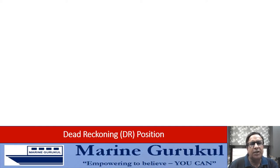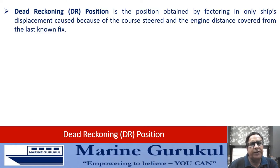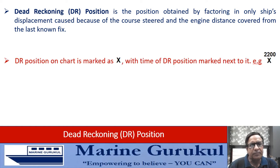The next is the DR position, or dead reckoning position, which is obtained by factoring in only the ship's displacement caused by the course she steered and the engine distance covered from a last known fix. To mark the DR, we must know the last known fix, the course or courses steered during that interval, and the engine distance covered. The DR position on the chart is represented by a cross.